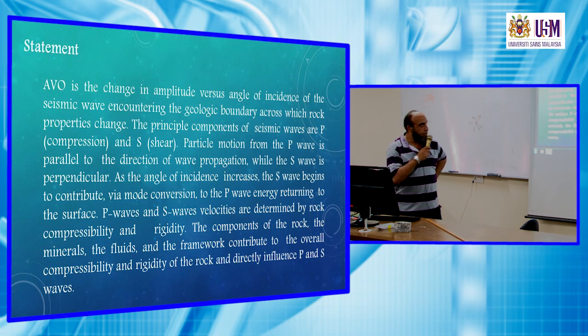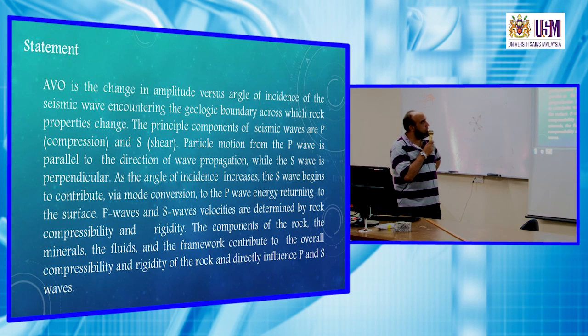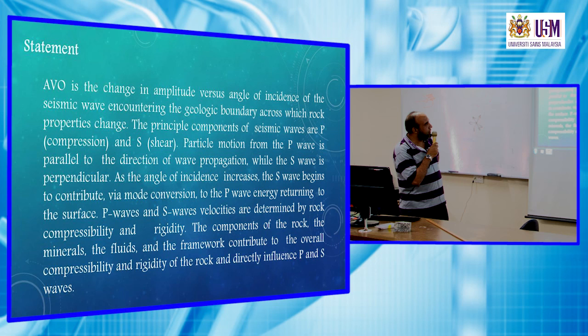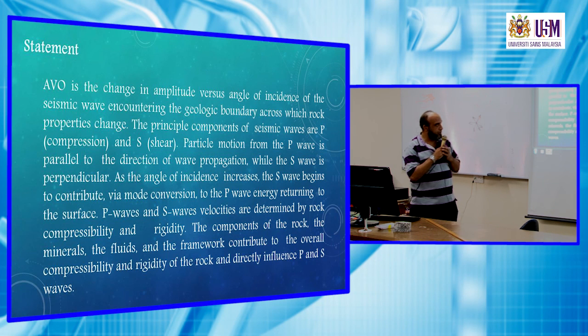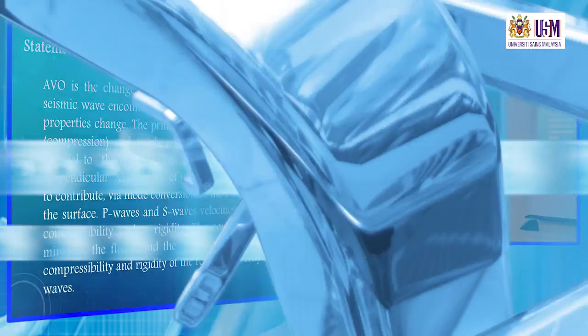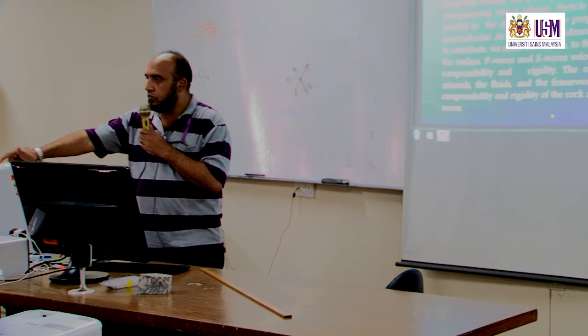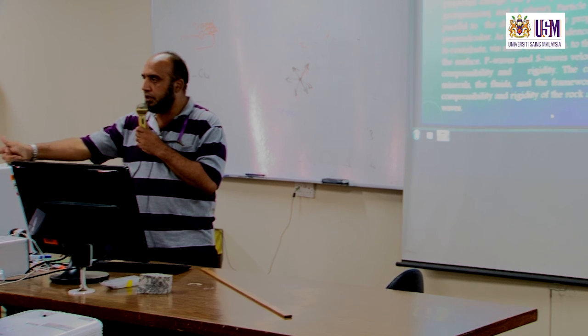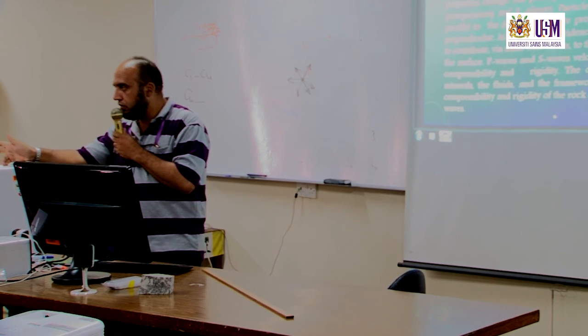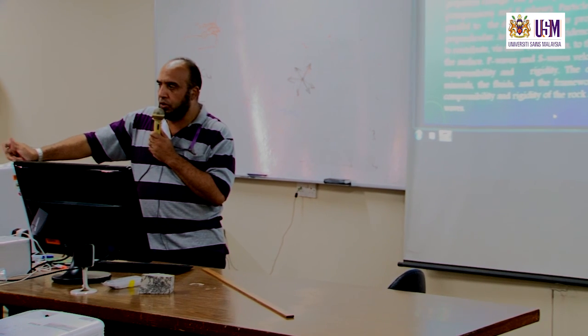This one is called seismic attributes and specifically we are going to speak about amplitude versus offset method. As a statement, AVO is a change in amplitude versus angle of incidence of the seismic waves encountering the geologic boundary across which rock properties change. So when the angle of incidence of the seismic ray, which means when the offset changes, the amplitude also changes.